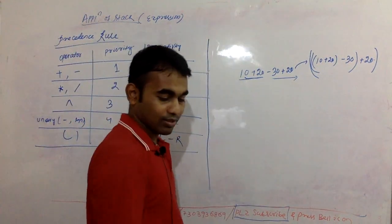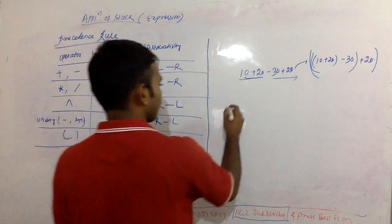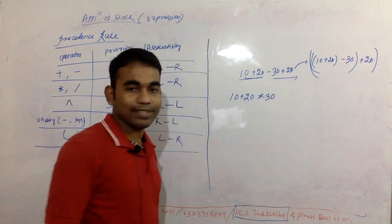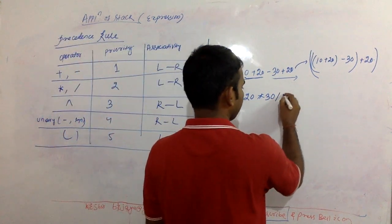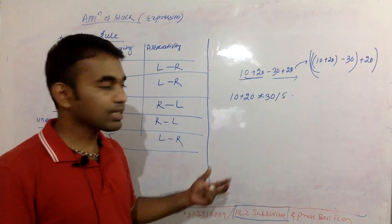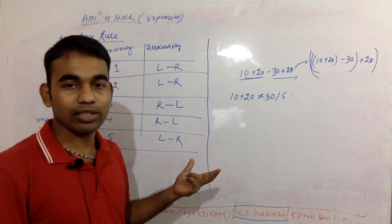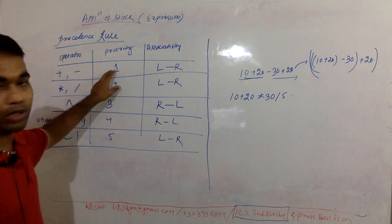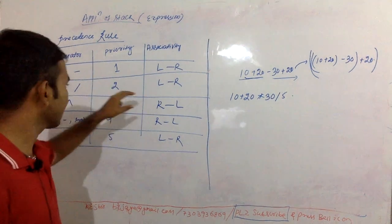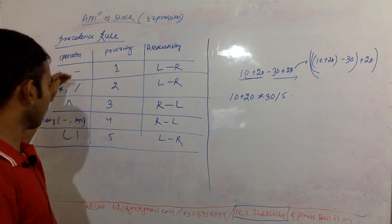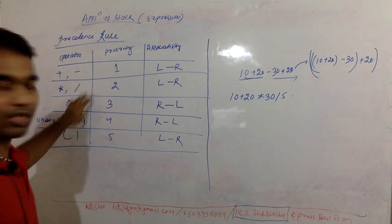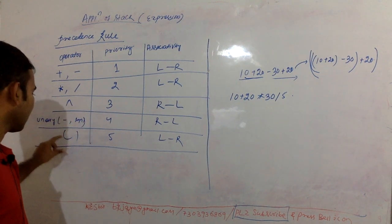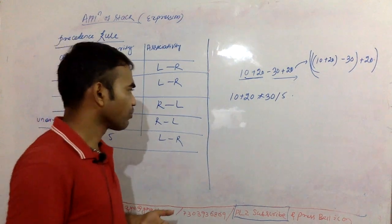Let's take another example with a combination of operators: 10 plus 20 multiplied by 30, maybe divided by 5. Which operation happens first? Obviously multiplication. Looking at the precedence table: addition and subtraction have the lowest priority (level 1), then multiplication and division (level 2), then power (level 3), and brackets have the highest priority.